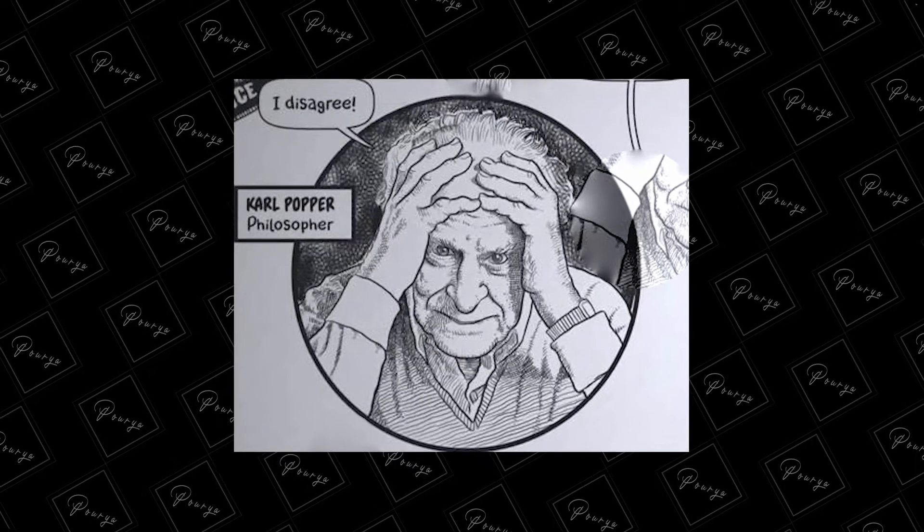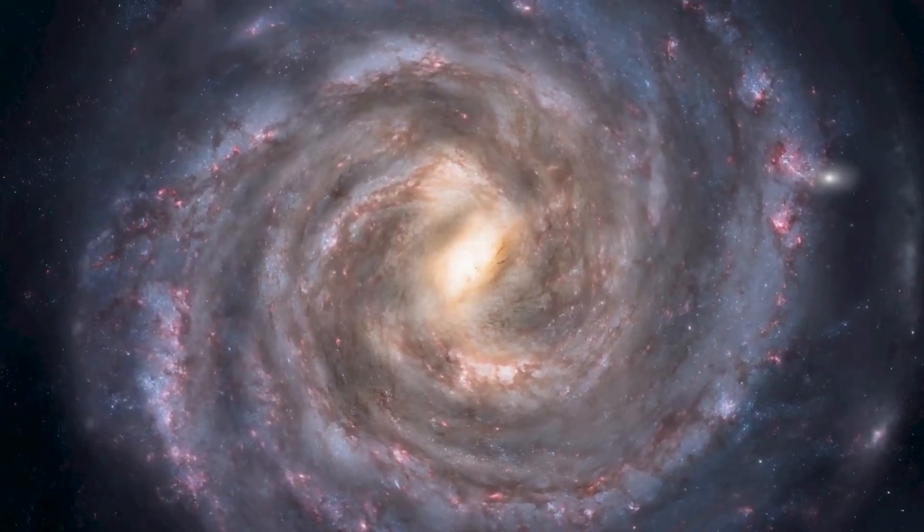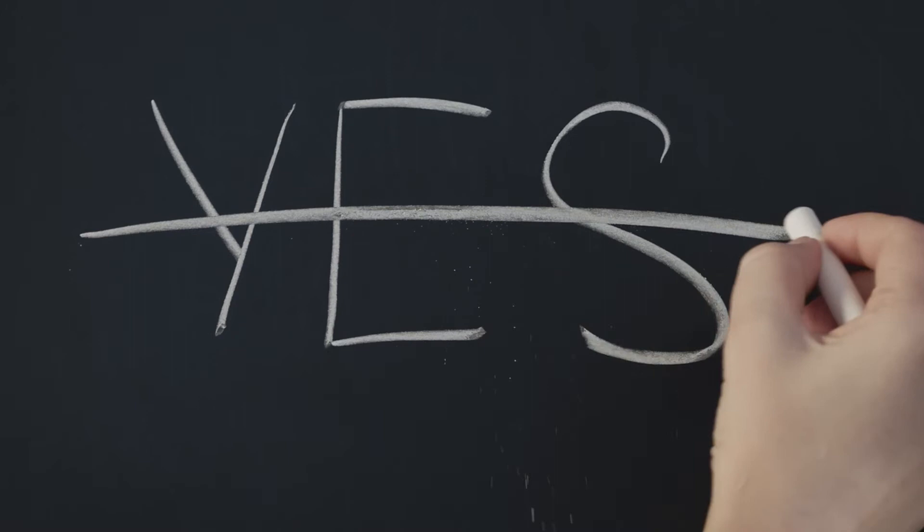If we can find even one example that disproves a theory, we can consider that theory falsified. This brings us to the term falsification, which is one of the most important concepts in science. Falsification means that scientists must try to show that a theory is wrong, and if they fail to do so, they actually strengthen that theory. Falsification is the opposite of verification and confirmation — in science, you shouldn't try to confirm a theory, but rather try to falsify it.